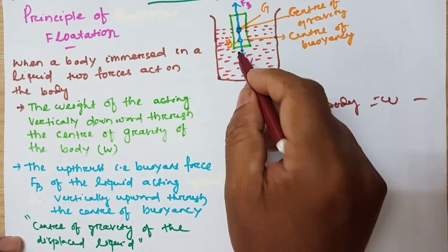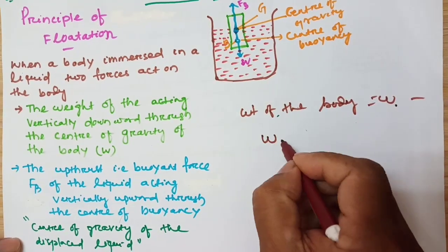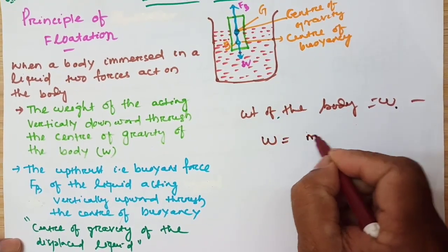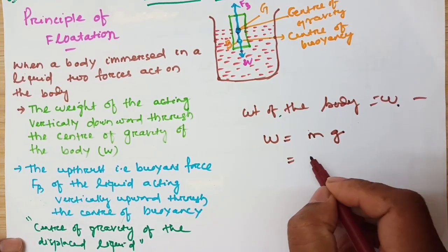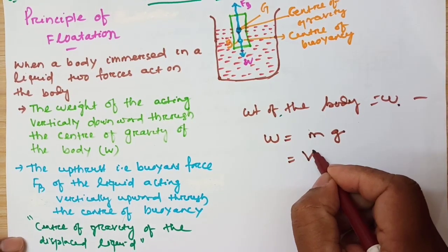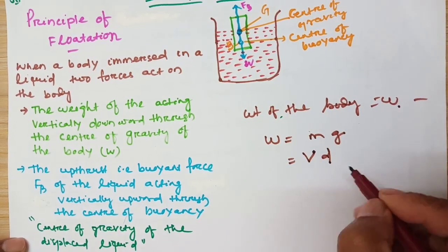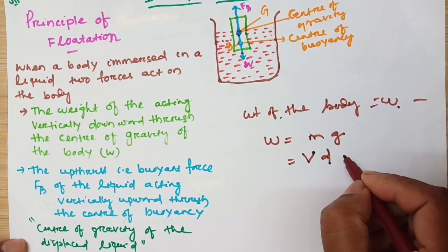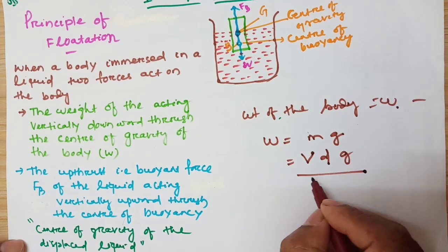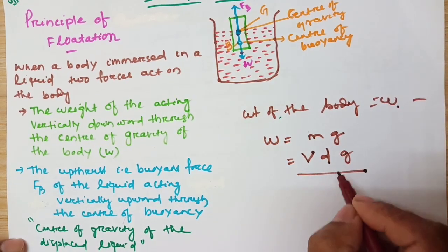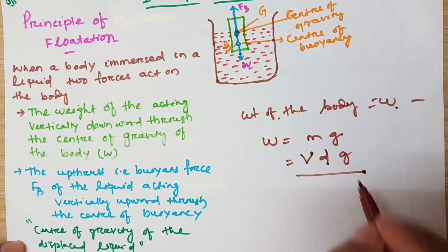So two forces act on the body. One is the weight of the body, W, that is M into G. Mass is volume into density, so W is equal to V times D times G — volume of the object, density of the object, and G, the acceleration due to gravity.